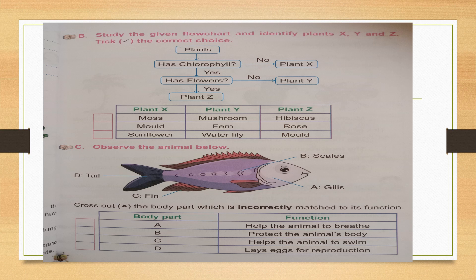Option A — gills: function is to help the animal breathe. Is it true? Yes — no problem then. Option B — scales: protect the animal's body. Fish have skin and then scales — scales do protect the fish. Think nicely. If it is wrong, give a cross in the box. If it is true, don't write anything.